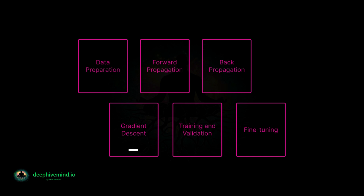Gradient Descent: back propagation uses a technique called gradient descent to adjust the weights and biases of the network. Gradient descent is a method that finds the minimum error by adjusting the weights and biases in small steps in the direction of the steepest error reduction. Training and Validation: the training process is repeated multiple times, using different batches of data and updating the weights and biases with each iteration. The validation set is used to evaluate the performance of the network during training and to prevent overfitting. Fine Tuning: once the CNN is trained, the network can be fine-tuned by adjusting the hyperparameters, such as the number of layers, the number of neurons, and the learning rate. This step is important to achieve optimal performance and prevent overfitting.